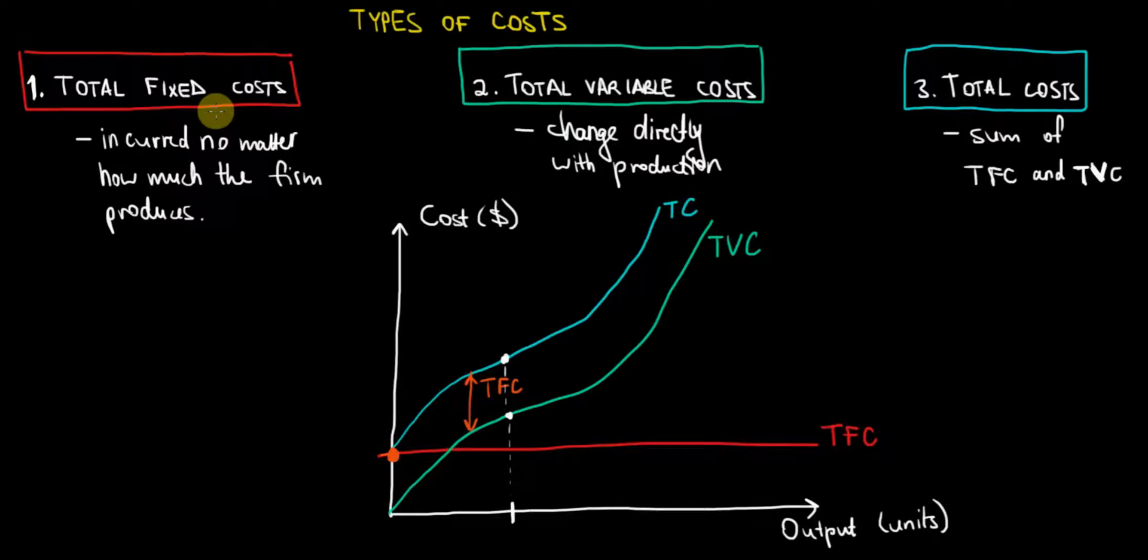The total fixed costs will usually be the fixed factors of production like land or capital or the very specialist labor skills that we need. We incur them no matter how much the firm produces. Therefore we have to pay them once regardless whether we produce or not. They are necessary for us to even get started.